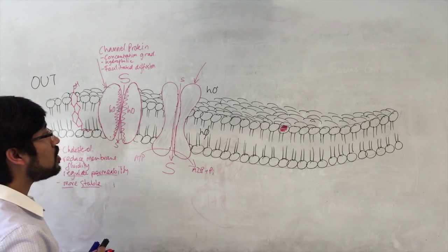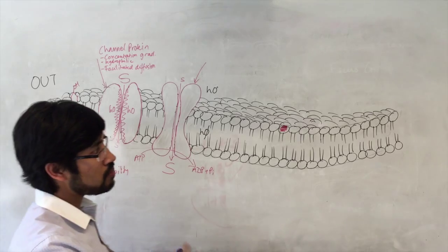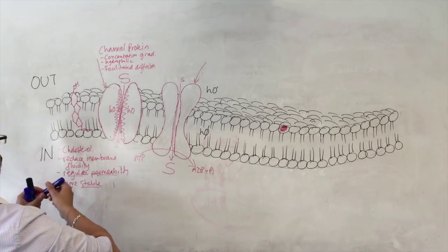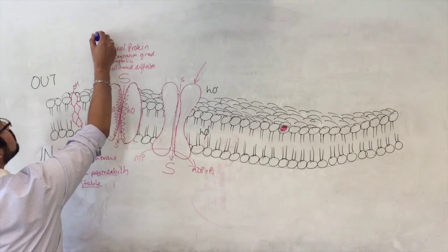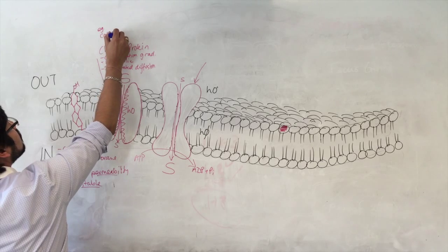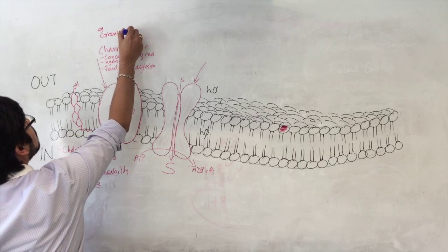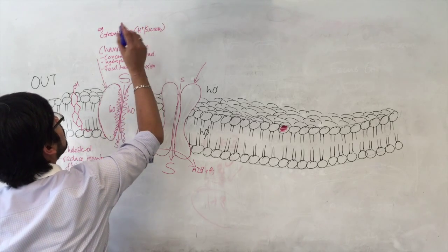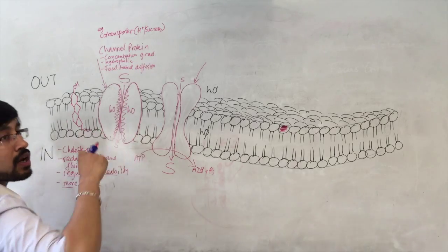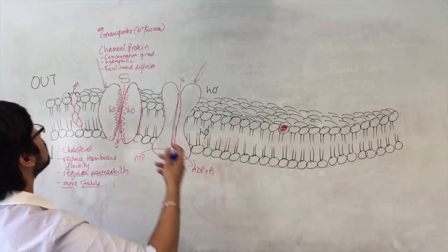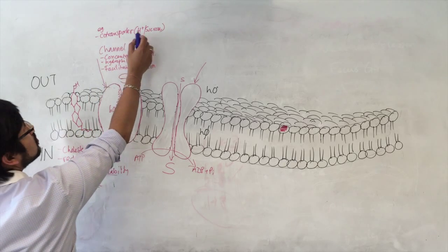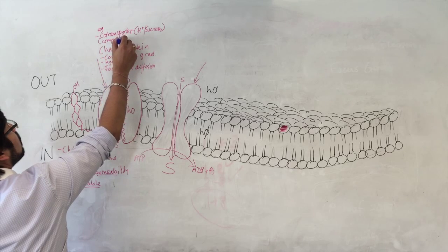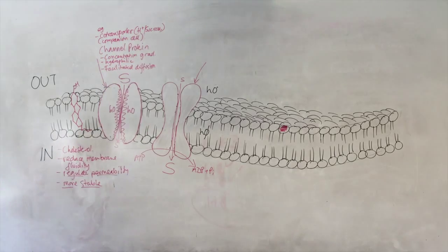One example, and I would really urge you to kind of make links to other parts of the course where these things might be applied. One example where we looked at this was in the co-transporter. The co-transporter that co-transported H-plus and sucrose in the companion cell in sucrose translocation. So remember that? It's that kind of protein that is doing that job.